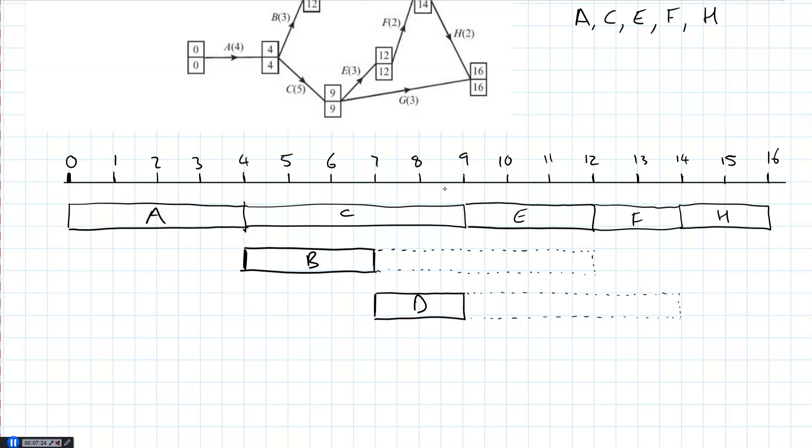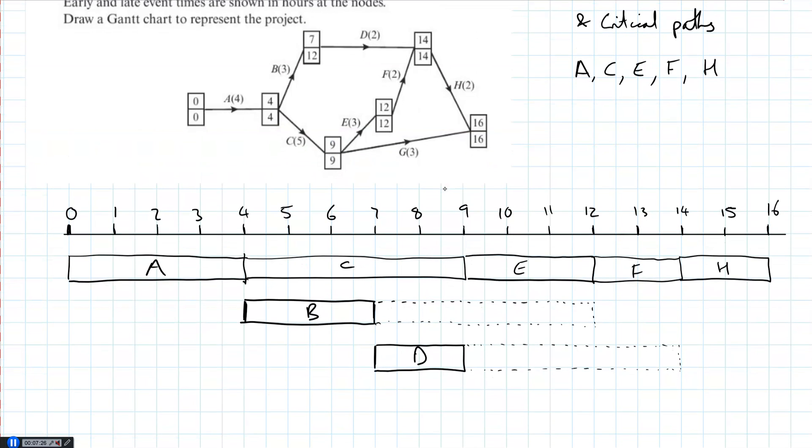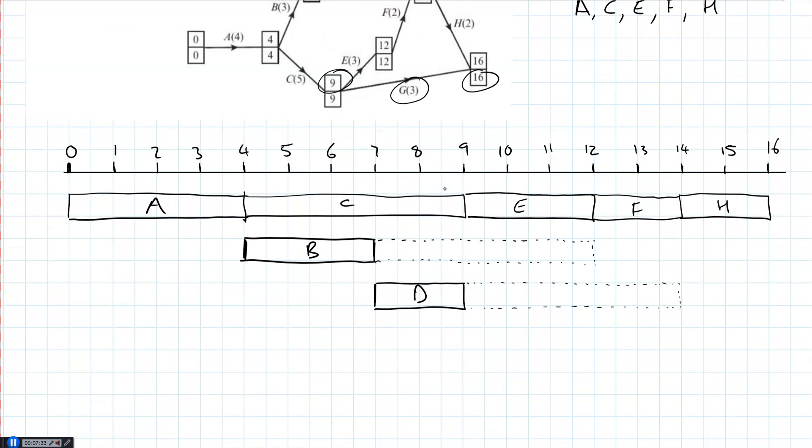Let's get this done. So now we need G, and that's the last one we need. So G can start at 9. Takes 3. And finishes as late as 16. So G starts at 9. Takes 3. 1, 2, 3. So it goes up to 12. And it can finish all the way to the end.